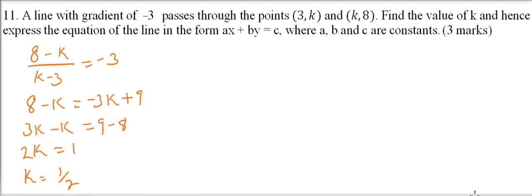Once you have k, you can use point-slope form. Using the point (k,8), we have (y - 8)/(x - k) equals the gradient. Since we found k = 1/2, we substitute: (y - 8)/(x - 1/2) = -3. Cross multiplying gives y - 8 = -3x + 3/2.